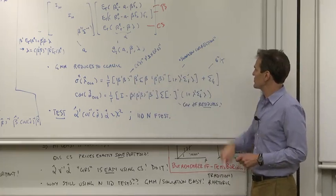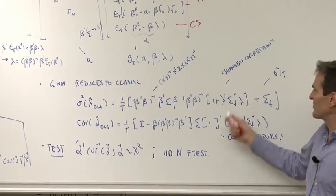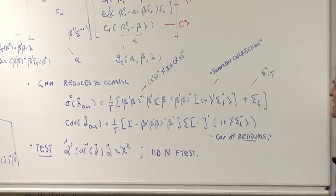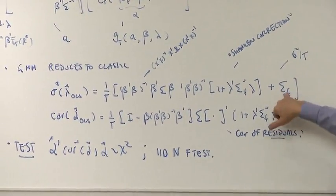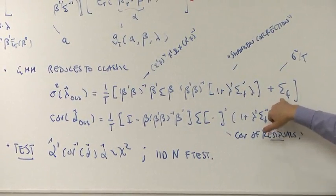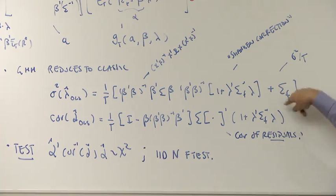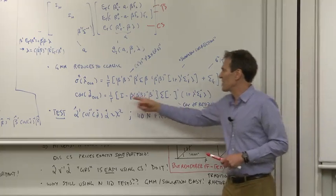This thing here is called the Shanken correction. It corrects for the fact that the betas are estimated in the same sample, the generated regressor. And there's our friend, sigma over root T, which of course belongs in a factor risk premium standard error.